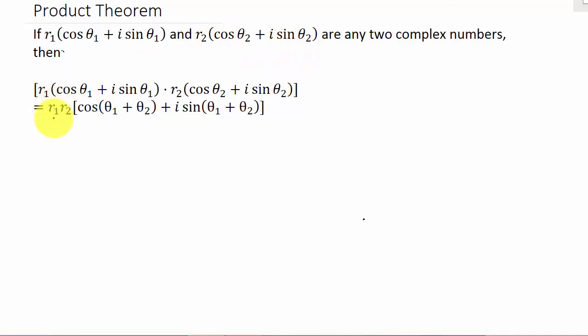So to multiply, you multiply r₁ and r₂ together, and then it's cosine of (θ₁ + θ₂) plus i times sine of (θ₁ + θ₂).